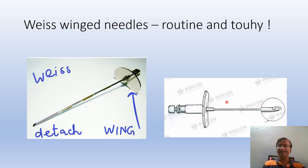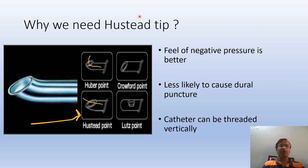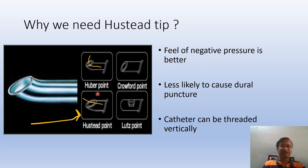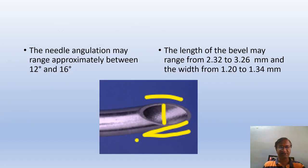This is the Tuohy needle with a Kruber tip. Instead of the Kruber tip, we need the Huber tip. Here you can see the Huber tip — it is slightly less angulated so that the catheter can be threaded vertically. It is less likely to cause dural puncture and the feel of negative pressure is better. That is why we prefer the Huber point over the Kruber point.